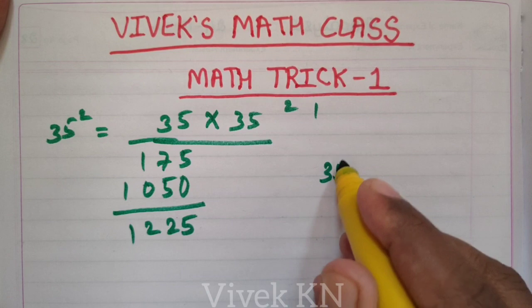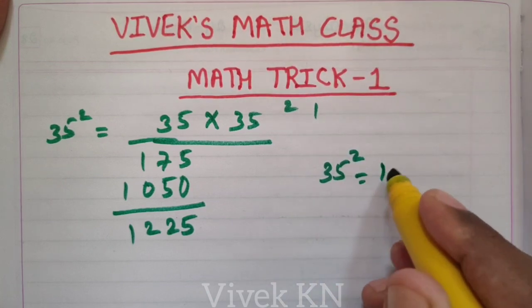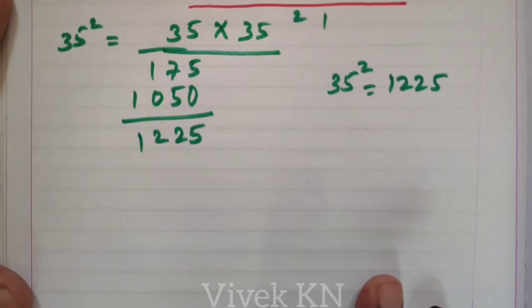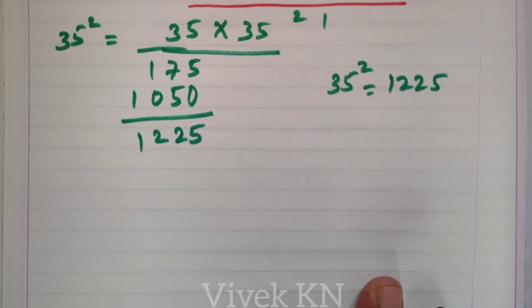That is, 35 square is equal to 1225. Now, let us use the technique from Vedic Mathematics, which can be applied only to numbers ending with 5.